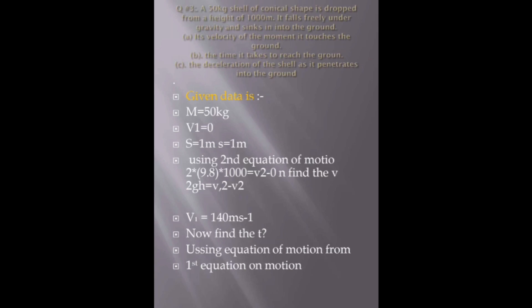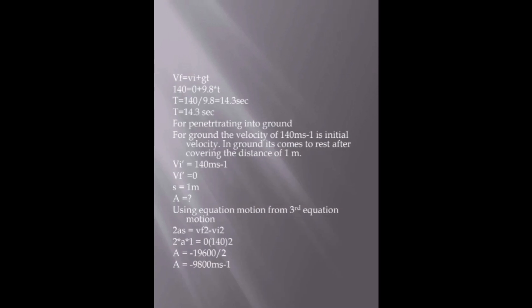Now find the t using equation of motion. From first equation of motion, velocity final equal to velocity initial plus gt. 140 equal to 0 plus 9.8 into t. T equal to 140 divided by 9.8 equal to 14.3 seconds. For penetrating into ground, the velocity of 140 meter per second is initial velocity. In ground it comes to rest after covering the distance of 1 meter.